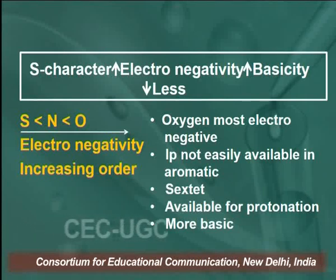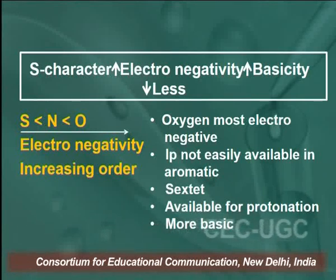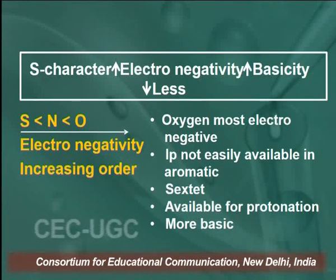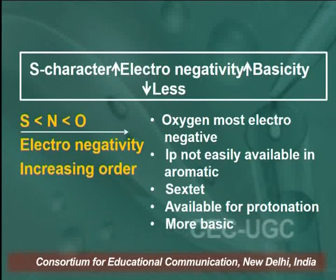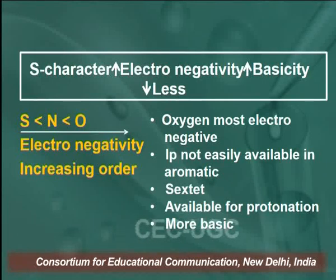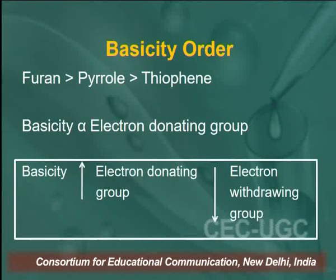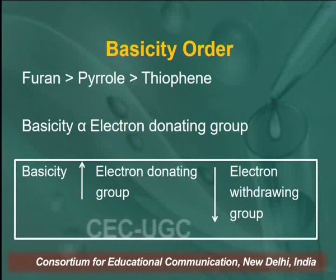If we compare the electronegativity of sulfur, nitrogen, and oxygen — oxygen is the most electronegative atom. It means the lone pair present on oxygen is not easily available for protonation; it is used in the delocalization of electrons and makes a pi cloud — a sextet responsible for aromaticity. So the availability of lone pairs for protonation makes a compound more basic. The basicity order is: furan is more basic than pyrrole, and pyrrole is more basic than thiophene.